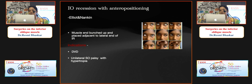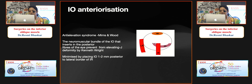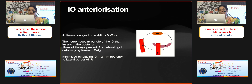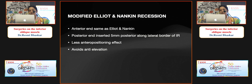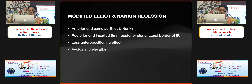With anterior transpositioning, the muscle is bunched up and placed at the lateral end of the inferior rectus. It is indicated in DVD and unilateral esotropia with hypertropia. The problem is it can cause anti-elevation syndrome. To minimize anti-elevation, place 1 to 2 mm posterior to the lateral border of the inferior rectus. In the modified Elliot and Nankin recession, the anterior end remains the same but the posterior end is inserted 5 mm posterior along the lateral border, reducing the anti-elevation effect.